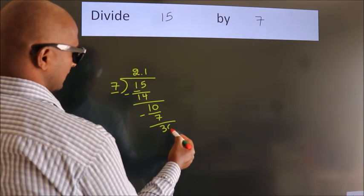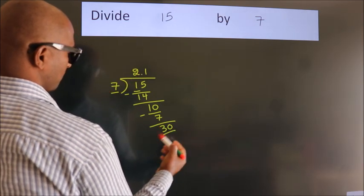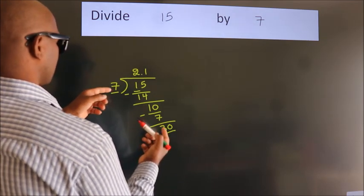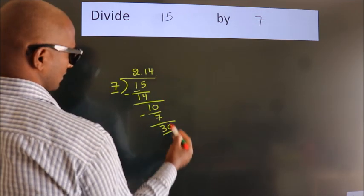So directly take zero. So 30. A number close to 30 in the seven table is seven fours, 28.